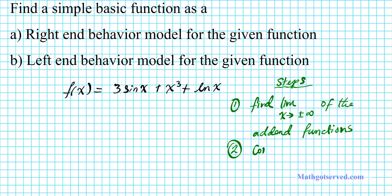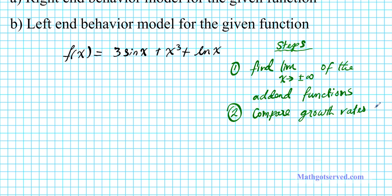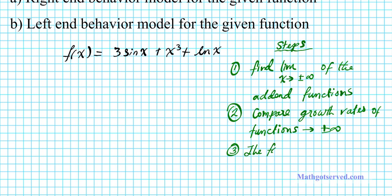What you're going to do is compare the growth rates of the addend functions that approach plus or minus infinity. When you compare your growth rates, the fastest growing function will be the end behavior model in that direction — the fastest growing function to infinity or negative infinity will be the end behavior model.